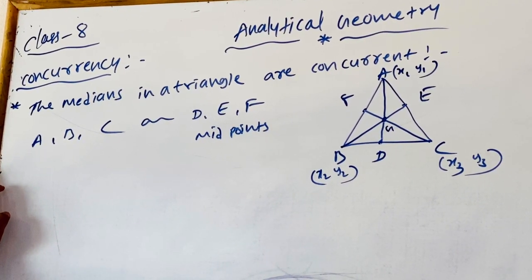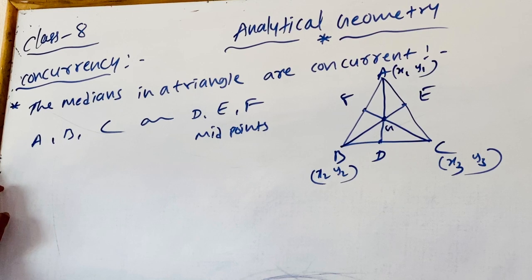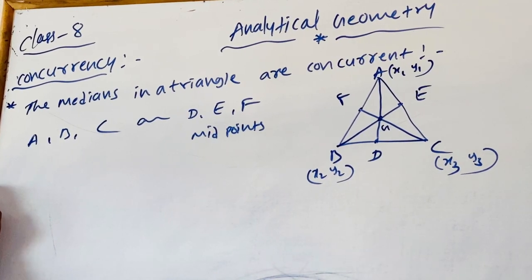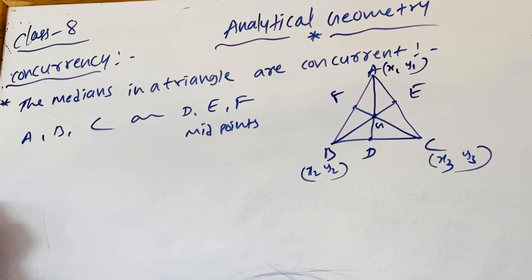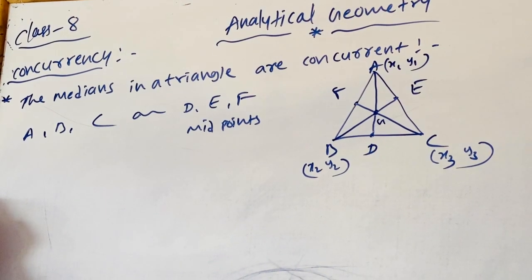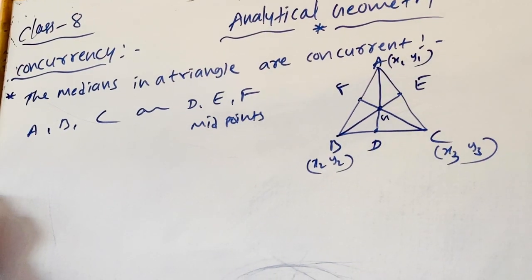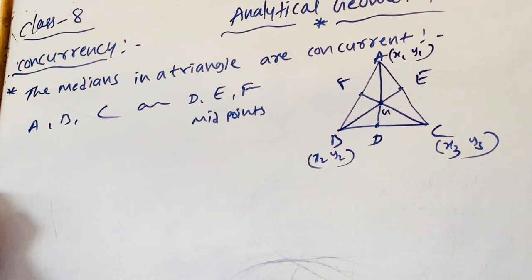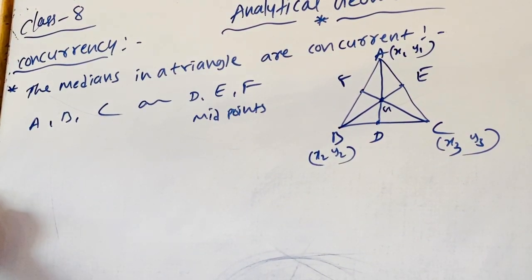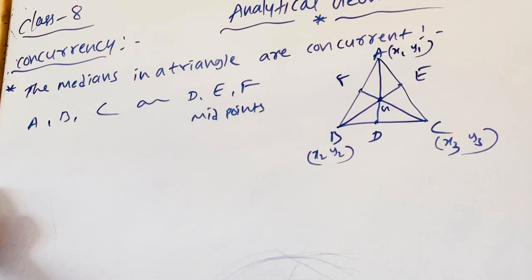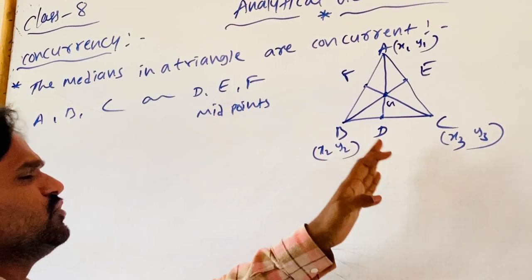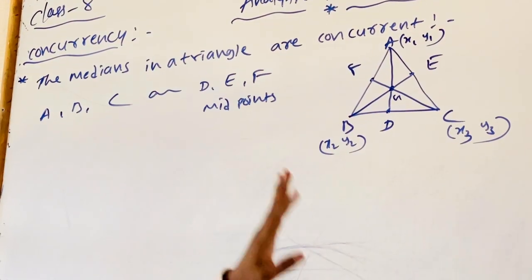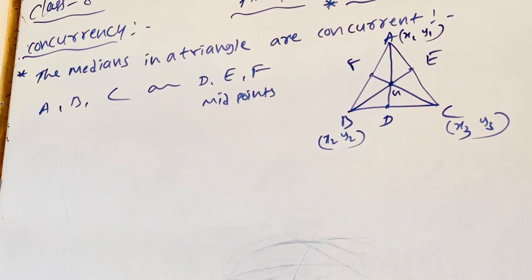To find the concurrence, we use the condition already discussed in the previous video: P·L1 + Q·L2 + R·L3 = 0, where P, Q, R are any three real values. Using that condition, we are proving the three lines — finding the equations of AD, BE, and CF.